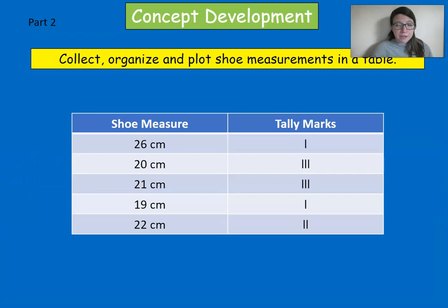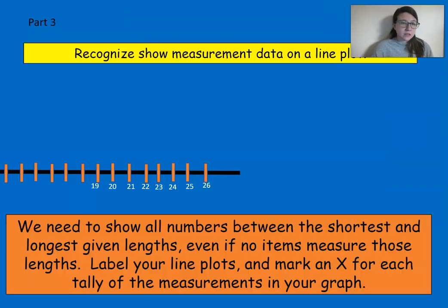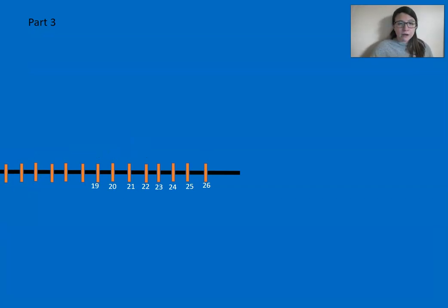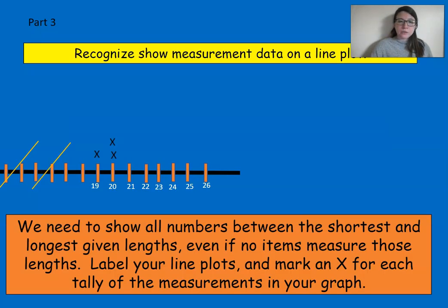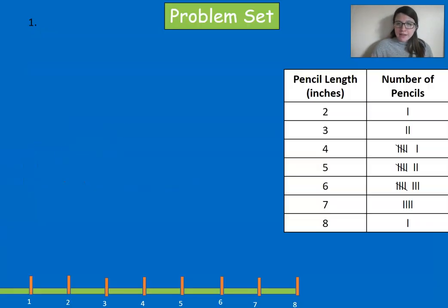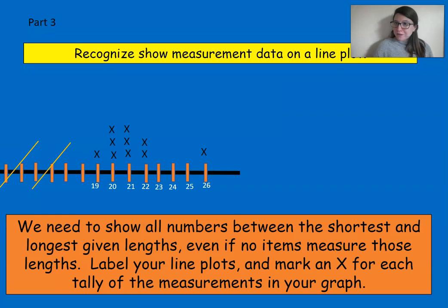Now I'm going to take my measurements. 19 has 1, 20 has 3, 21 has 3, 22 has 2, and then I skip a bunch and go up to 26. So let's plot that. Remember each X is one tally mark. Each X is one shoe. And it looks like that. Now we took the data from our graph and we turned it into a line plot. And you're going to do the exact same thing with the shoes in your house. Pretty cool, right?